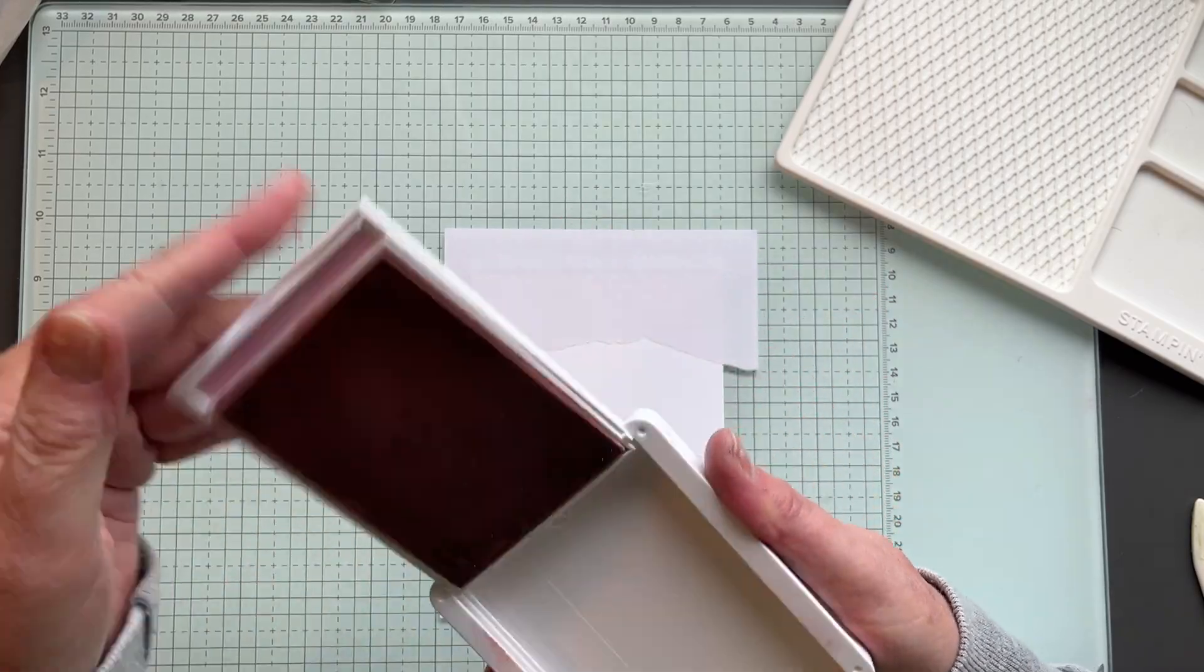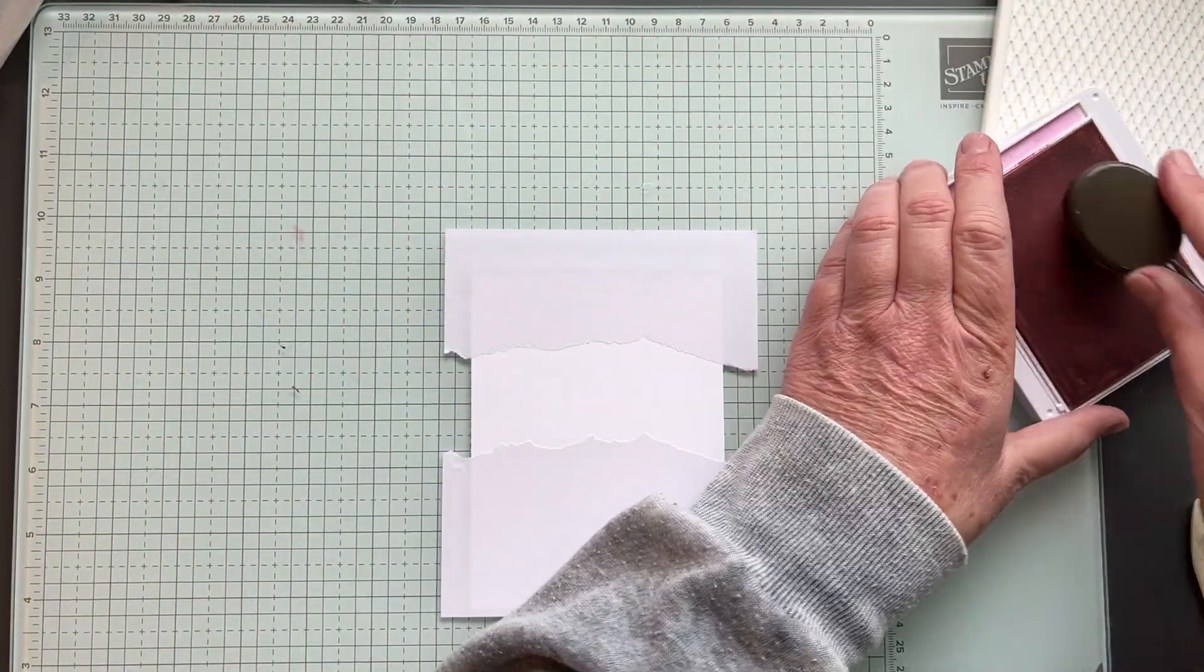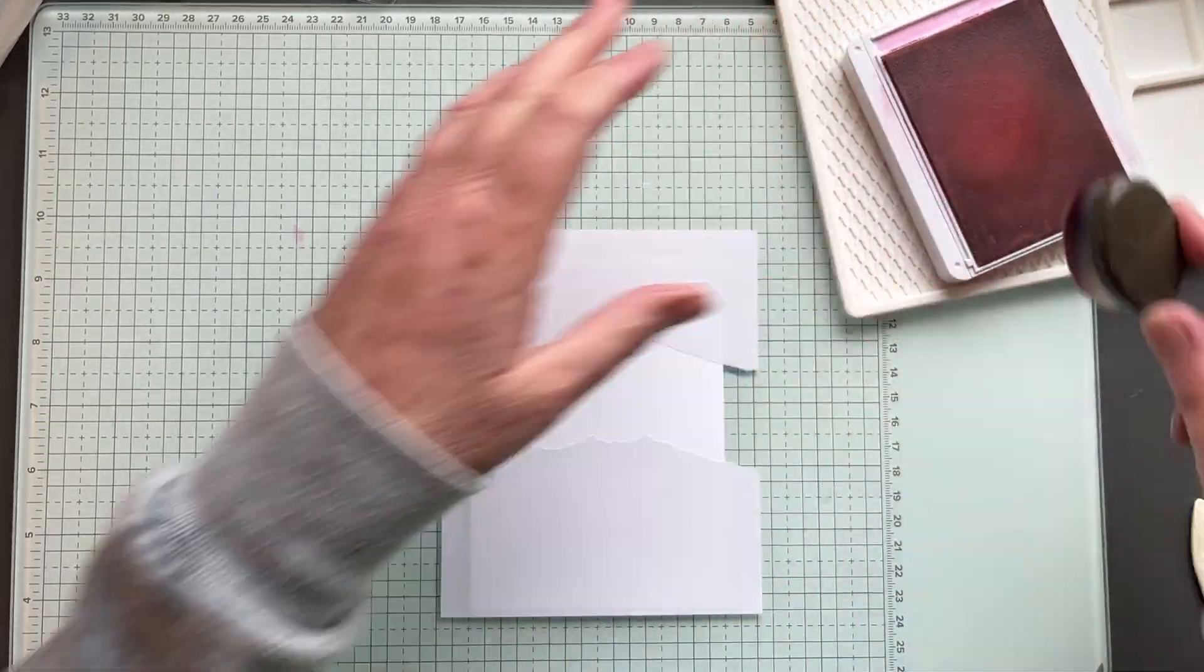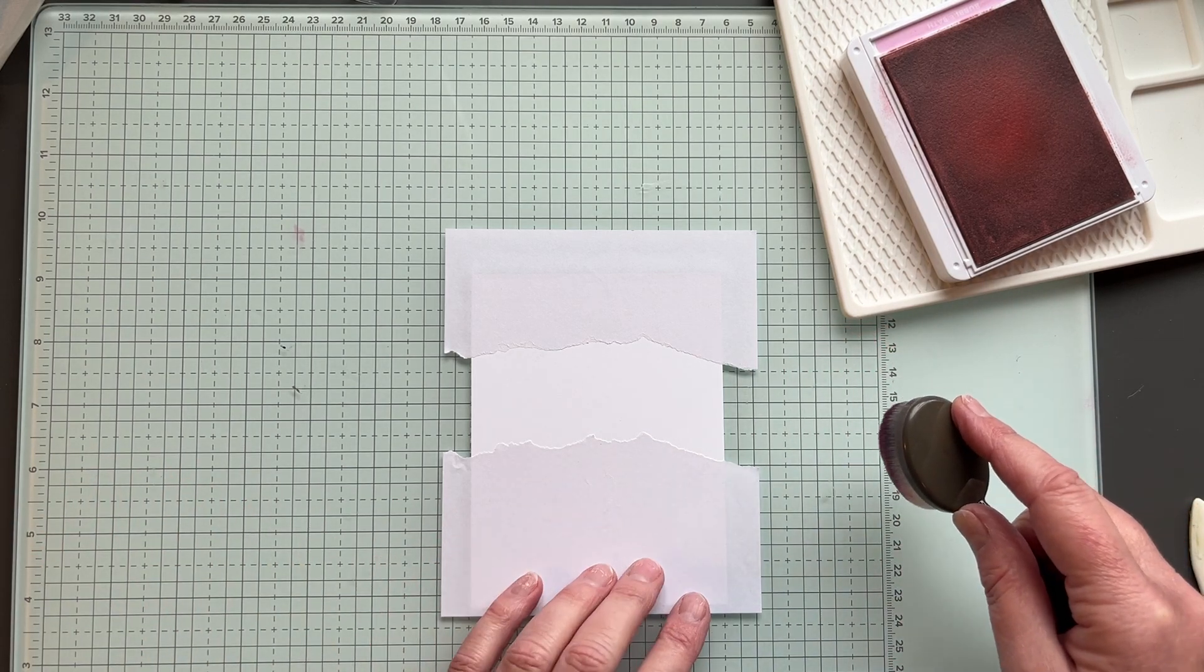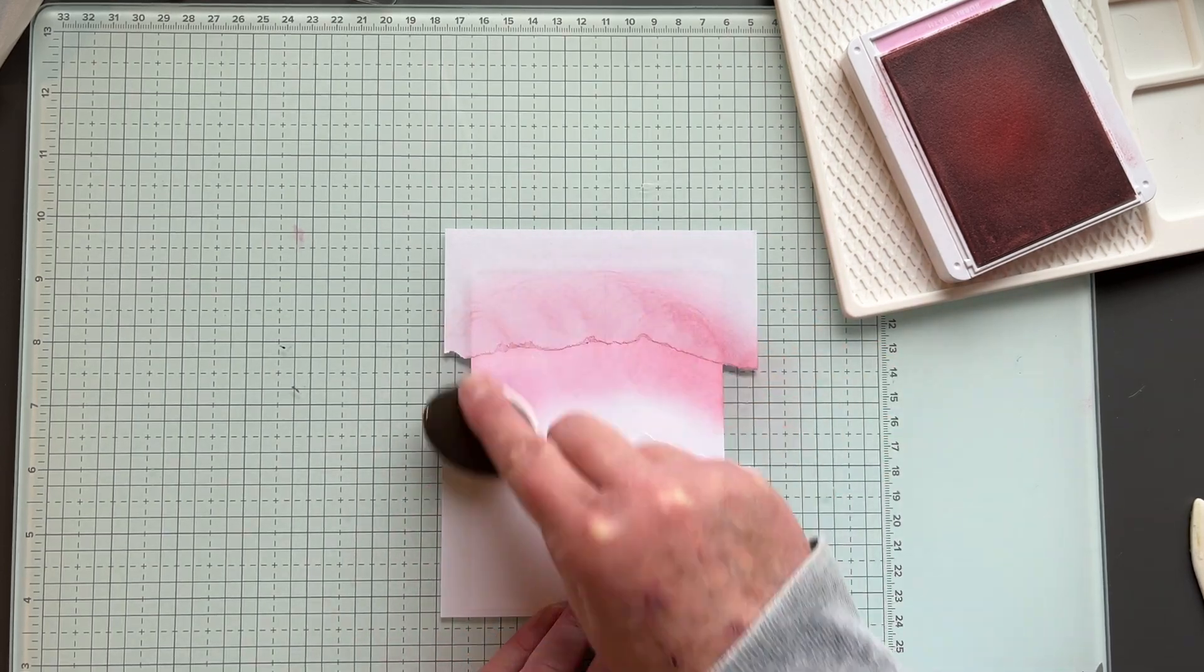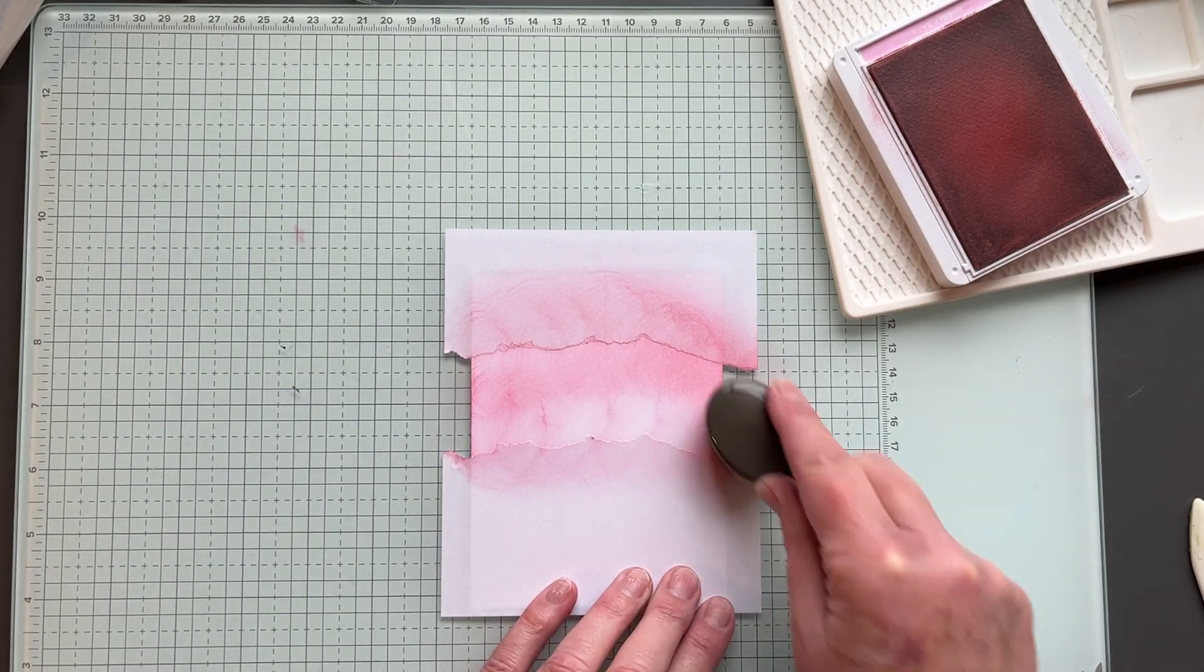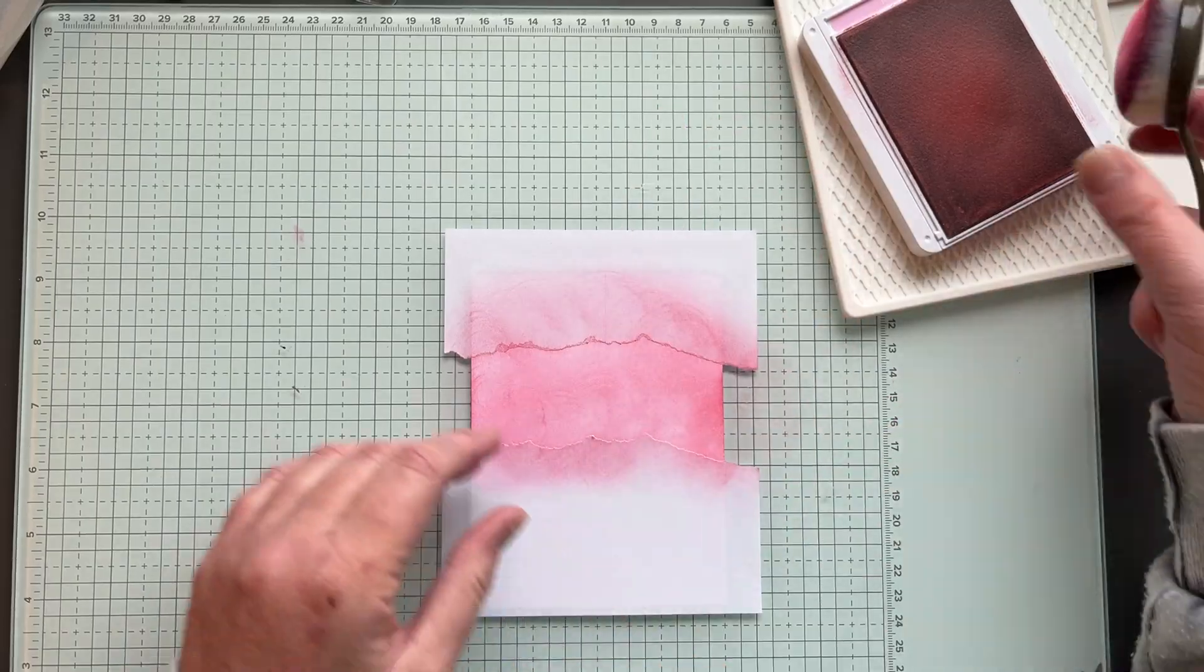Then I'm going to use bubble bath ink and a blending brush. And I'm just going to add ink on. And you always want to start off your paper so you don't get a big smudge. And just do it in circles. And then pick up a little more ink and rub it again.